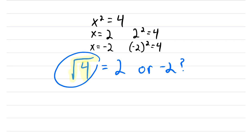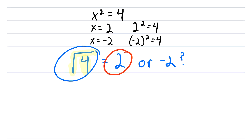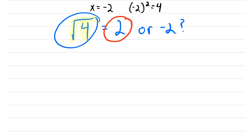So this notation refers specifically to the principal square root of 4. But what's that? Well, quite simply, the principal square root is the non-negative square root. So in this case, that's 2. So with all that said, we can rewrite this a little neater, knowing now that the principal square root of 4 is just equal to positive 2.